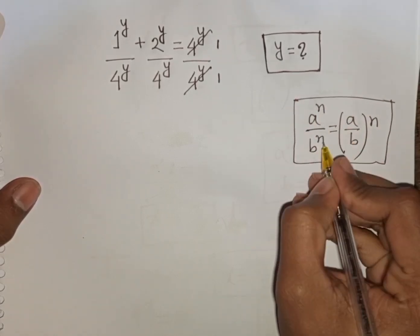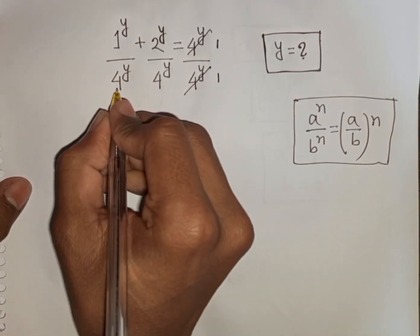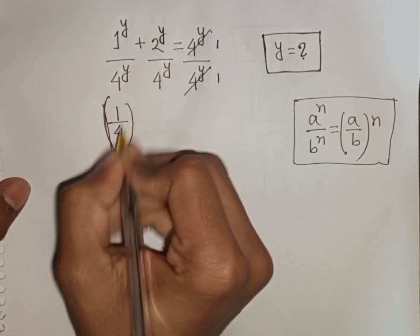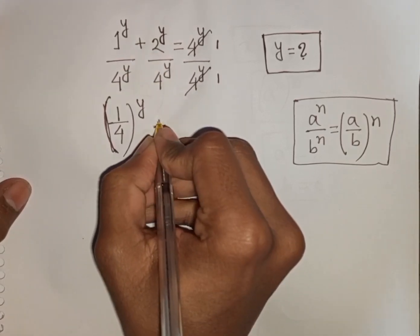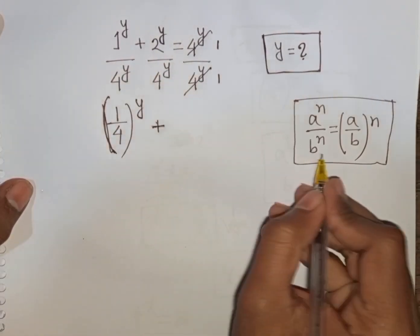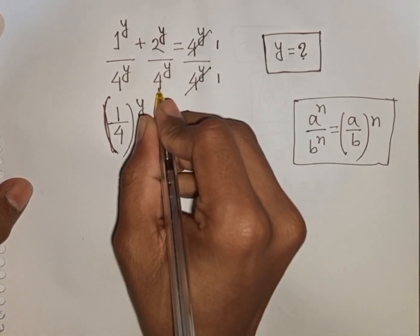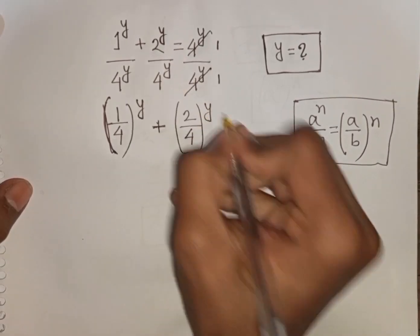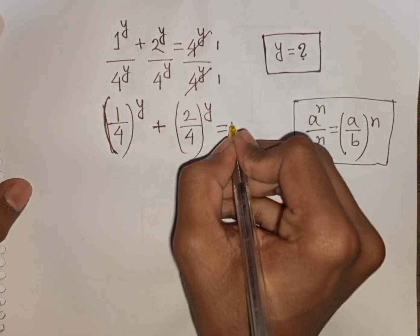Since we have the same power y but different bases, according to this formula we can write (1 over 4) power y plus (2 over 4) power y is equal to 1 divided by 1, which means it equals 1.